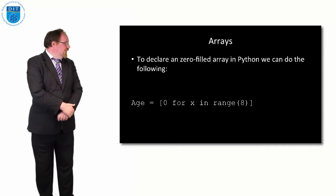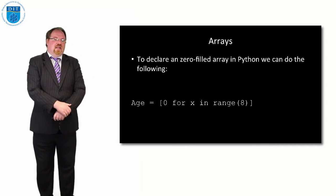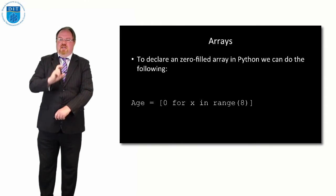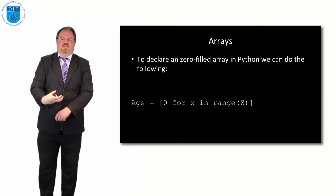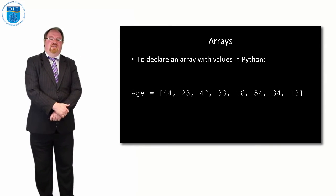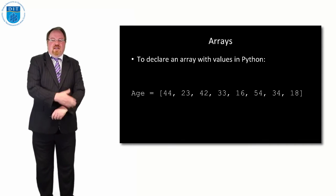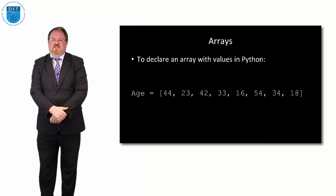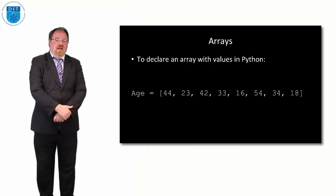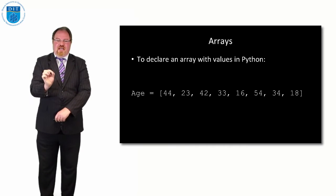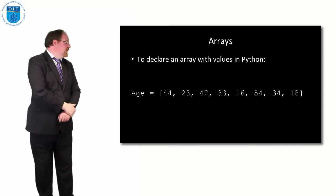So: age = [0 for x in range(8)]. Because I'm putting zeros in — and zero is a whole number — Python knows I'm declaring an integer array. Another way to declare an array with values is simply: age = [values separated by commas inside square brackets]. Remember two things: square brackets for an array, and the assignment is the equals sign, not an arrow.